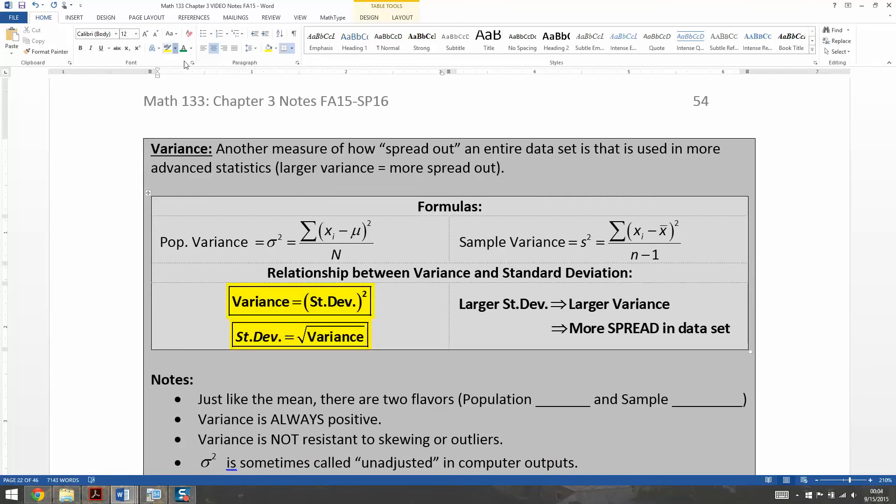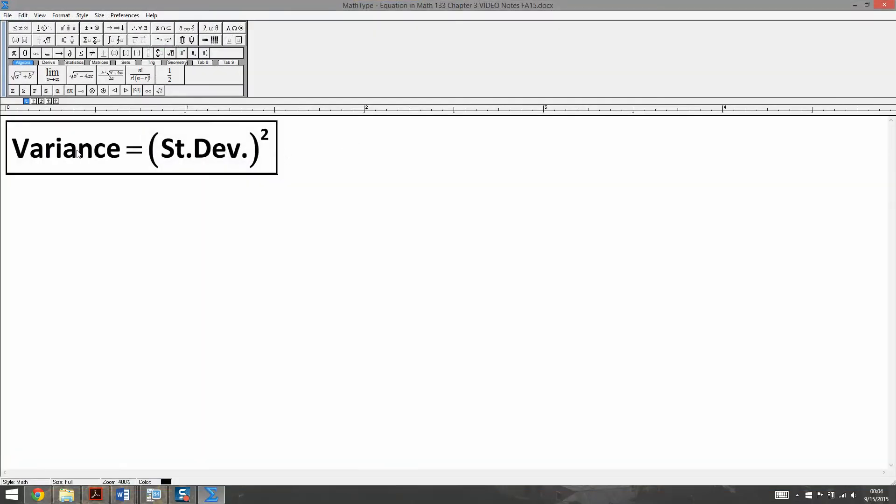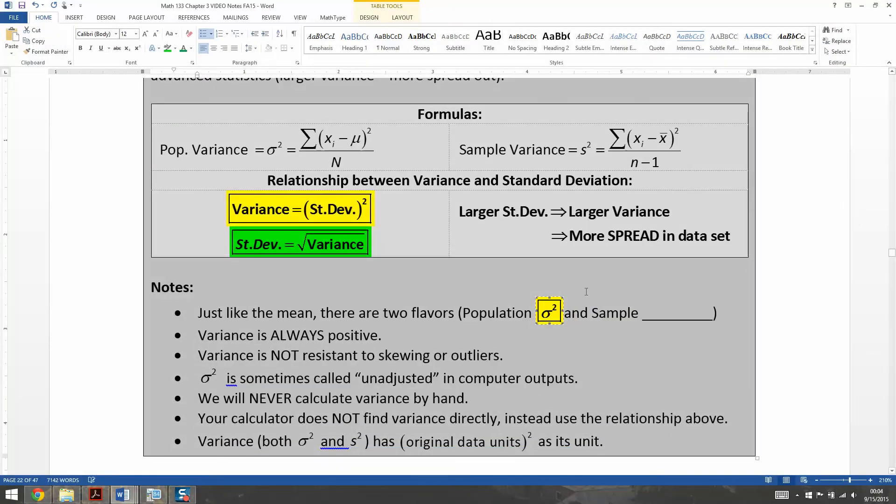I'm going to shade them in different colors just so you can keep them straight from each other. There we have it now, just like the mean and the standard deviation for that matter, there's two versions. You can have your variance, which is the sigma squared, and you can have your variance, which is the sample variance, which is s squared.